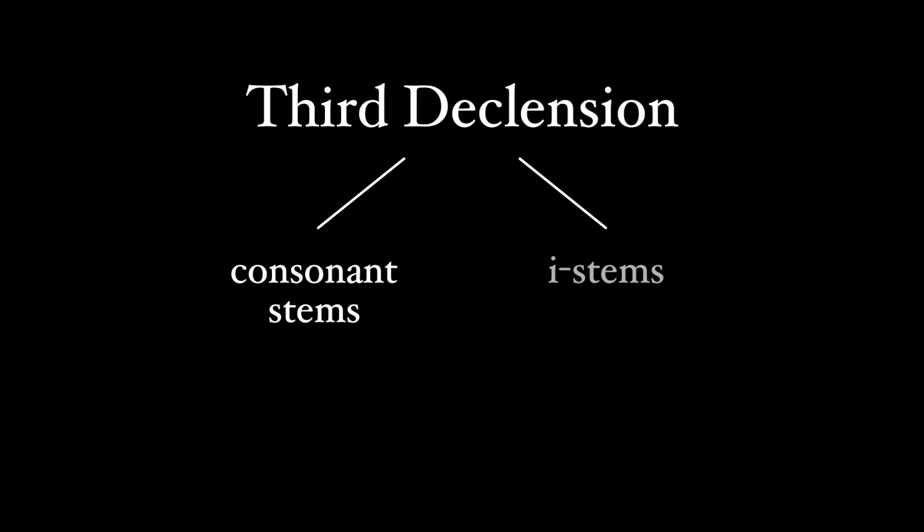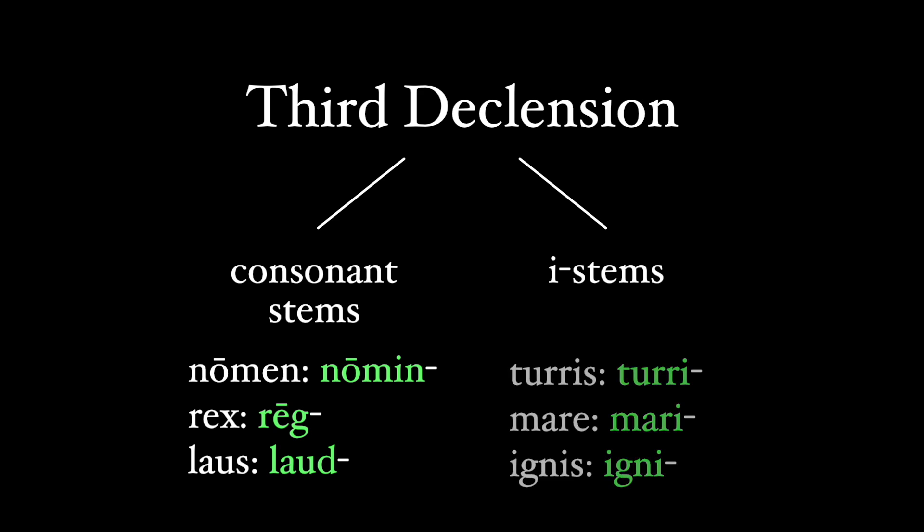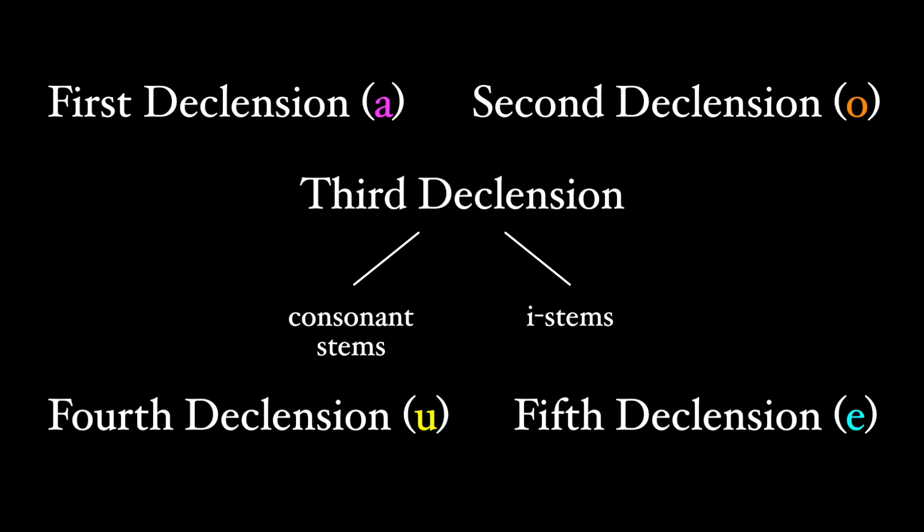Actually, it's worth noting that third declension nouns are divided up into consonantal stems, those with consonants at the end of their base form, and these I-stems, those with an I on the end of the base. You see, the five different declensions in Latin are based around these vowel stems. The first declension is for A-stems, the second for O-stems, the fourth for U-stems, and the fifth for E-stems, and so this leaves the third for I-stems and for the lack of vowels, the consonantal stem.